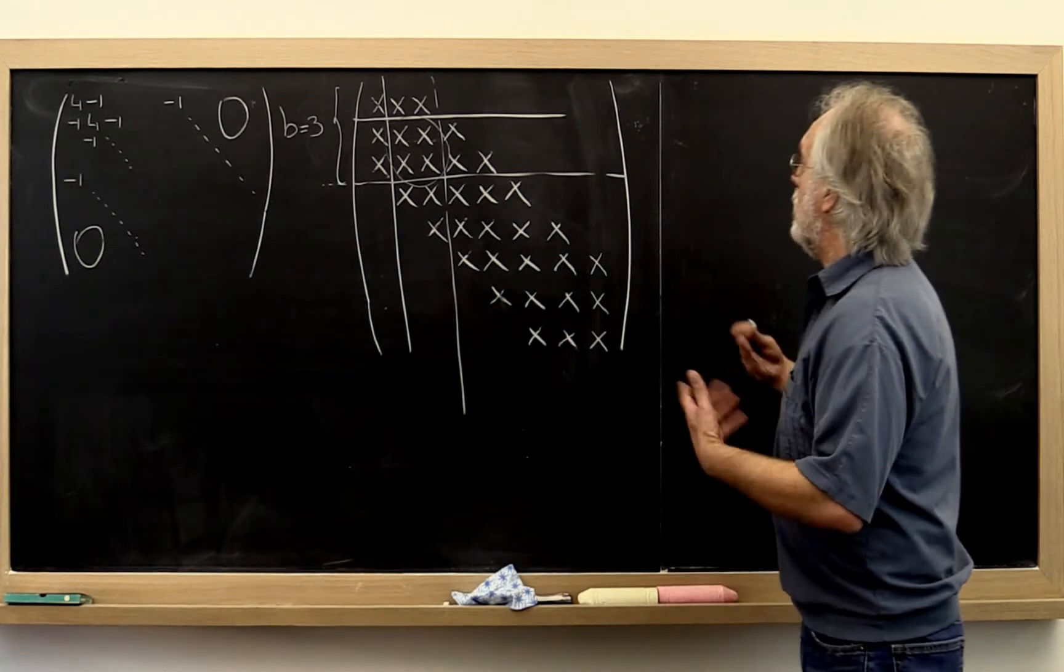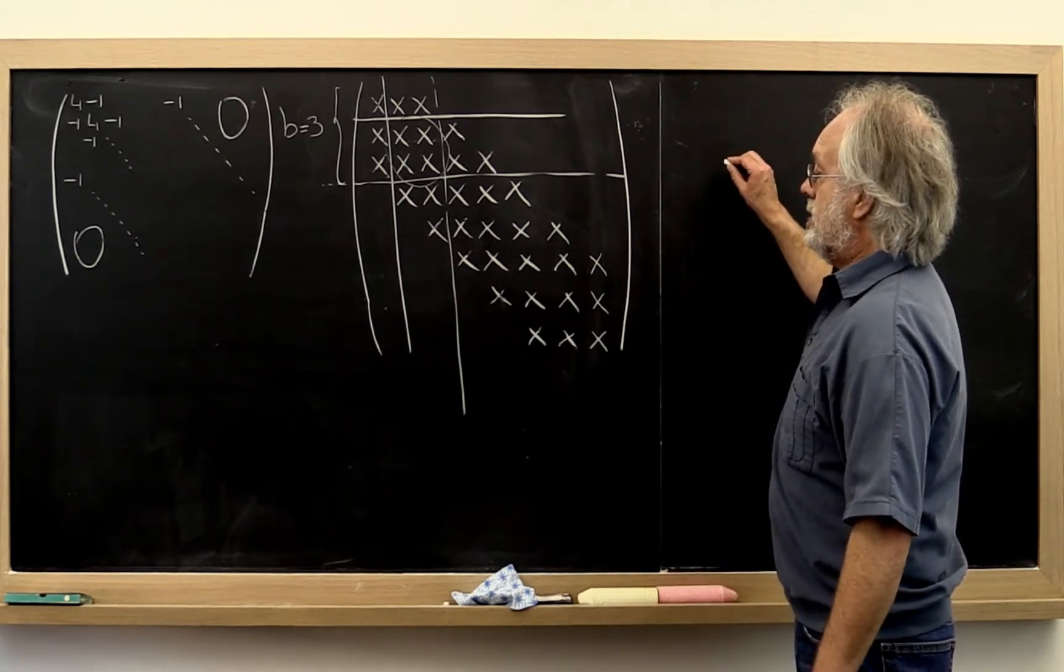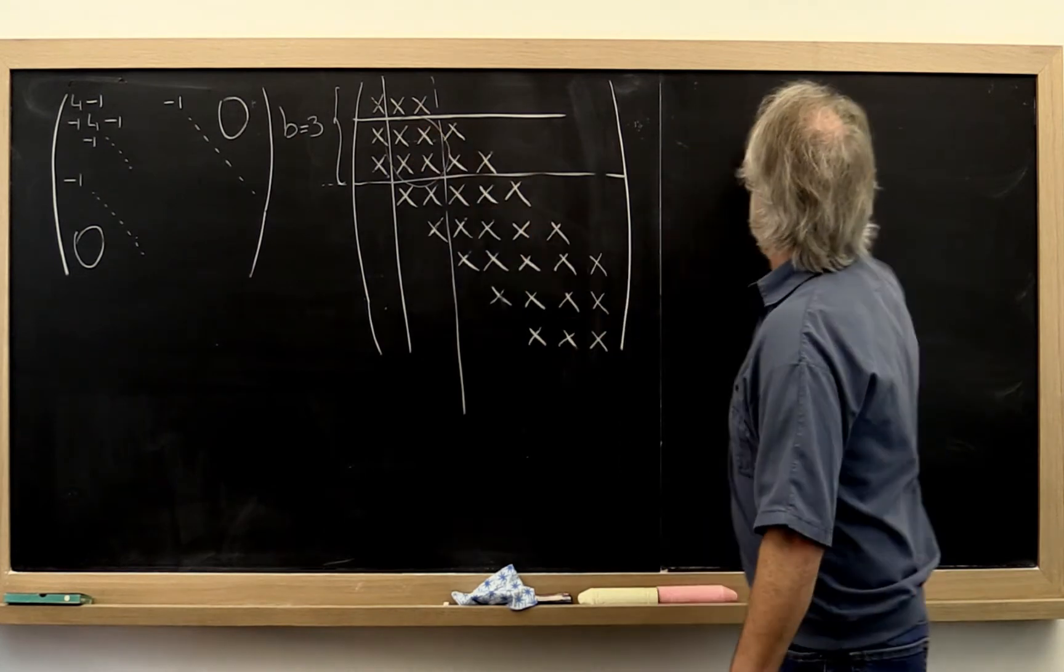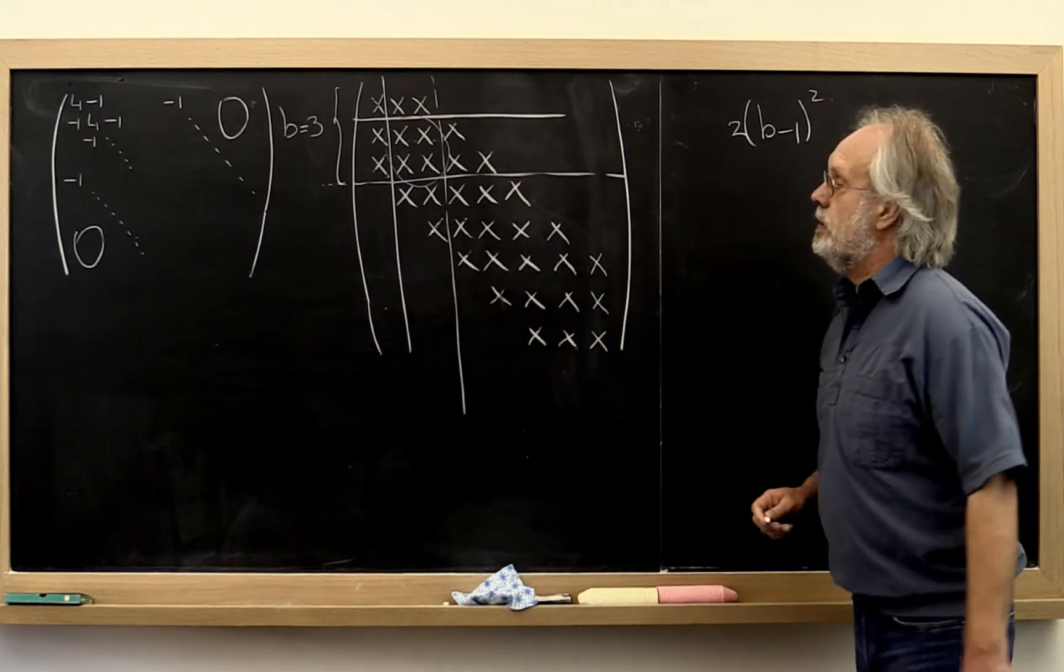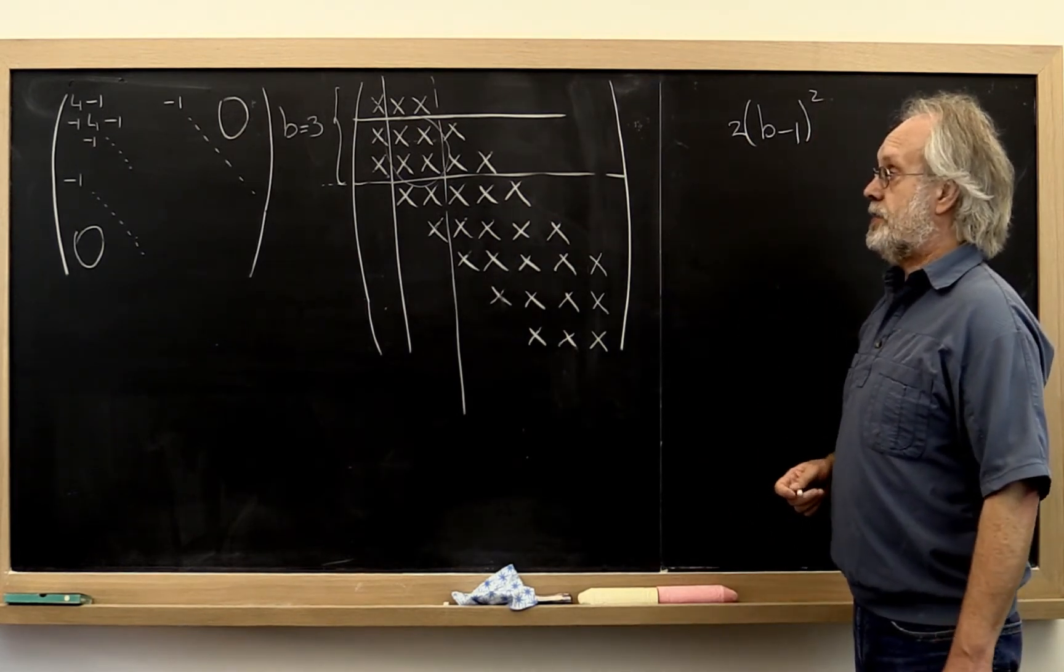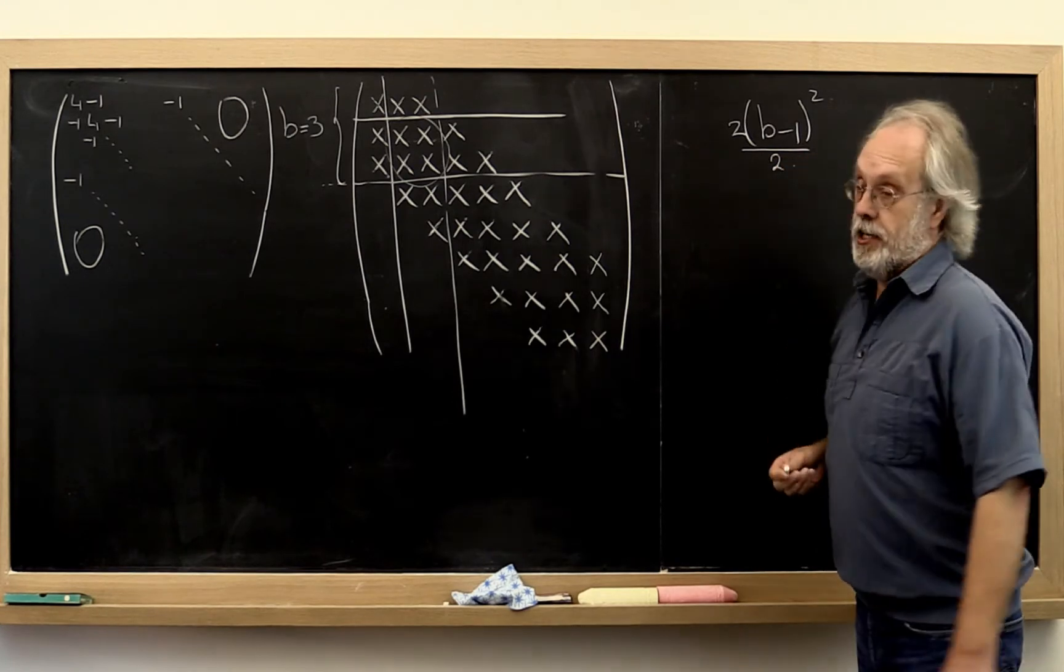So the cost of a rank one update would have been - this here is b minus 1 - so it would have been 2 times (b-1) squared. If we take advantage of symmetry, that's approximately divided by 2.